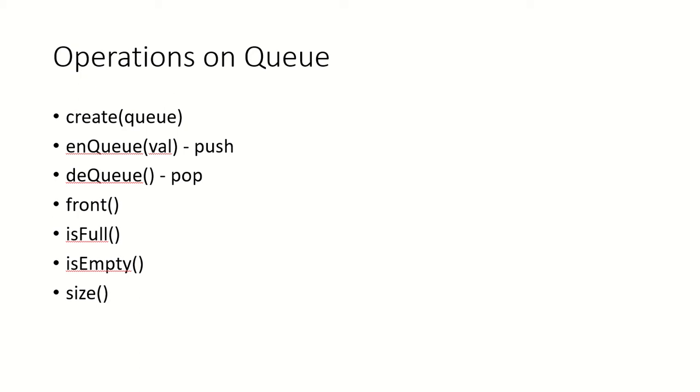What are the operations that can be performed on queue? Since we are talking about queue as an abstract data type, we think about its representations and operations, not the implementation part. A queue can be implemented using either an array or a linked list. The first operation is create a queue.